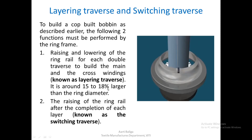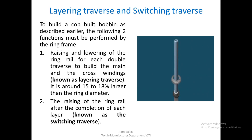This raising of the ring rail after completion of each layer is known as the switching traverse. So we have identified two different functions for the ring rail. One can observe the ring rail moving upwards slowly — as discussed — and rapidly coming down for the formation of the cross layer.